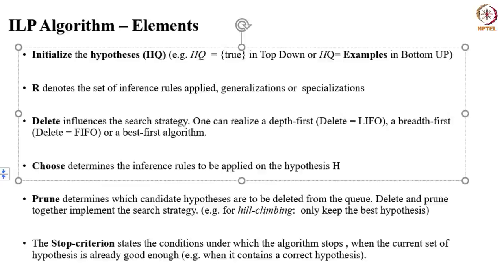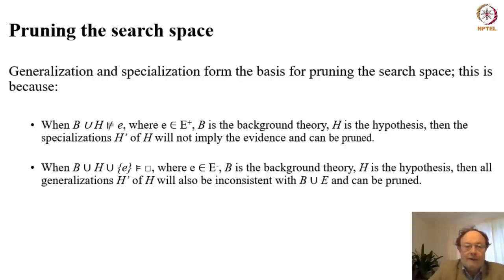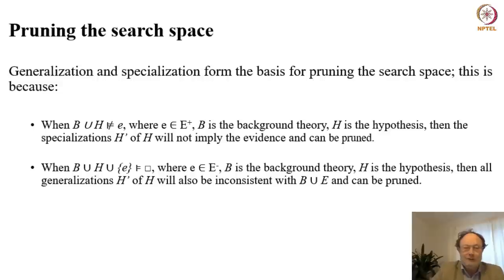The stop criterion should state when we finish; naturally, the main condition is that we have achieved at least one hypothesis in the list that is good enough. After transforming the hypothesis space in each iteration through generalization or specialization, we look at whether it is possible to prune the hypothesis set.